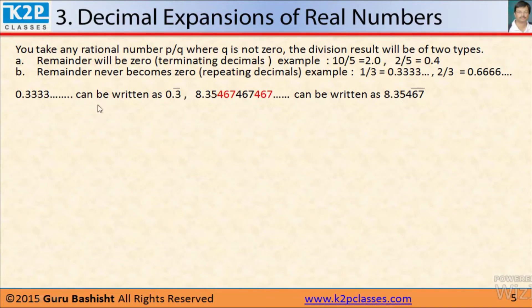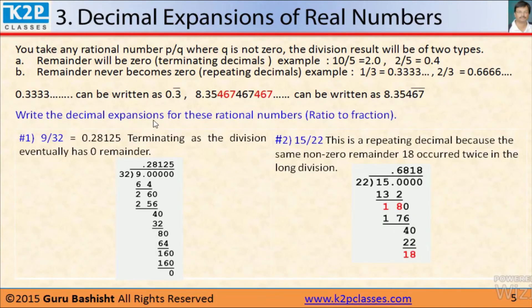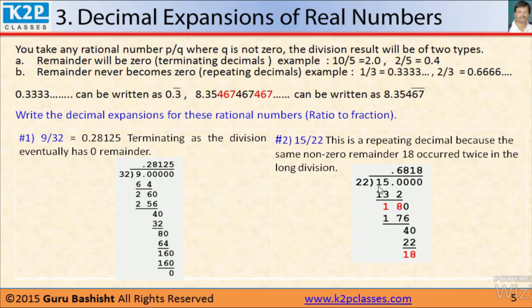Decimal expansion: 0.333 can be written as 0.3 with a bar over 3 because 3 is repeating. Similarly, 8.35467467 can be written as 8.35 with a bar over 467 because 467 is repeating. To write the decimal expansion for rational numbers like 9 by 32 — it is very simple. Divide 9 by 32 and you will get 0.281. Similarly, 15 by 22: divide 15 by 22 and you will get the corresponding decimal. This is the way we express a fractional number into its decimal form.